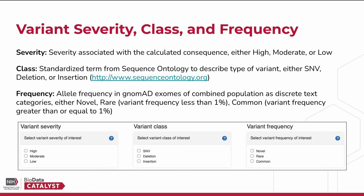Again, for more information you can visit http://www.sequenceontology.org. Variant Frequency refers to the variant allele frequency in gnomAD exomes of combined population as discrete text categories. These values are either novel, rare (variant frequency less than 1%), or common (variant frequency greater than or equal to 1%).